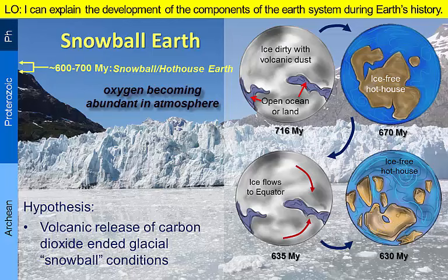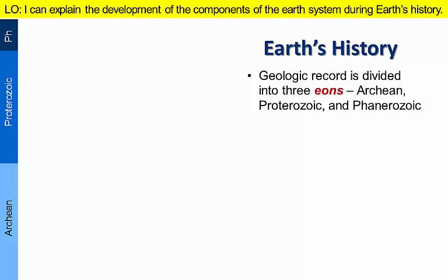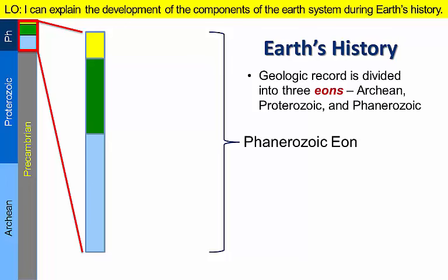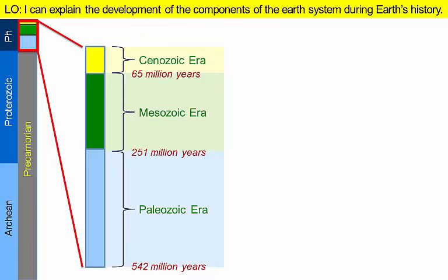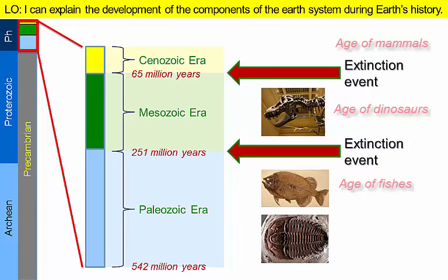Changing global conditions were about to spark a great surge in evolution and the development of organisms with hard skeletons that would be readily preserved as fossils. Fossils became much more abundant in the rocks of the Phanerozoic Eon, representing the last 542 million years of geologic time. The presence of fossils allows geologists to further subdivide the eon into three shorter eras: the Paleozoic, Mesozoic, and Cenozoic. The breaks between the Paleozoic and Mesozoic and the Mesozoic eras represent two major extinction events that significantly reduced the number of organisms present on the planet.